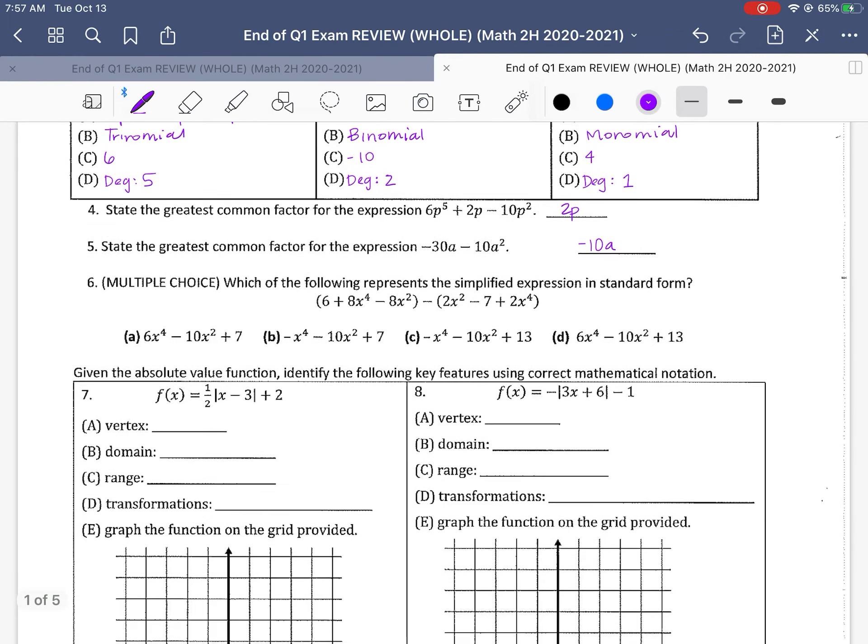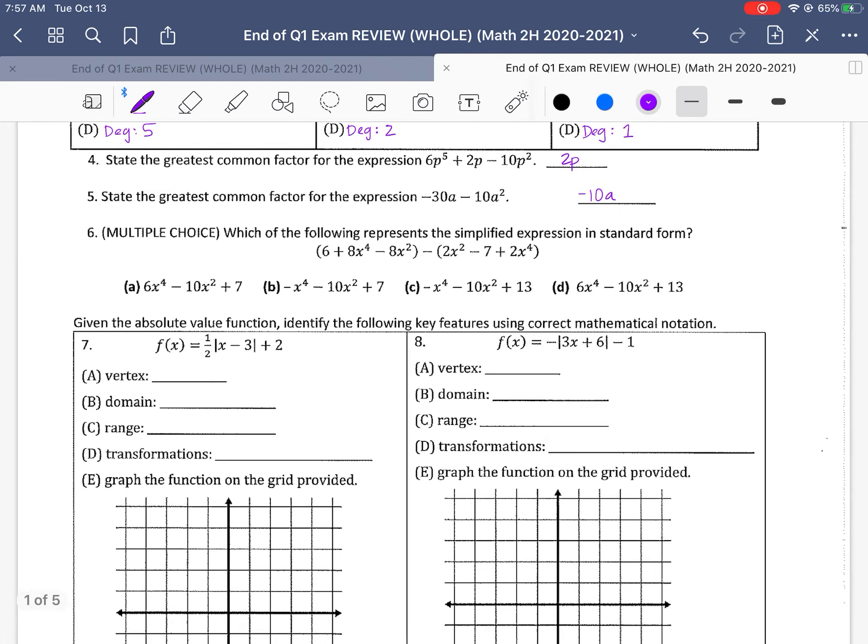Number 6, which of the following represents the simplified expression in standard form? Notice we're just adding, subtracting polynomials. This one's subtraction. So make sure that that negative applies to each piece of that second polynomial. So we've got a negative 2x squared. And then a negative times a negative 7 is a positive 7. And then a negative times that 2x to the 4th would be minus 2x to the 4th. So once we have that, we can combine our like terms. It looks like here we've got an 8x to the 4th and a negative 2x to the 4th. So I know that it's going to be a 6x to the 4th, so either this one or this one with my multiple choice. Notice you have a 6 and you have a 7. That would make 13. So it looks like it's going to be d because there's a 13 there. And then we just check the negative 8x squared minus 2x squared does give us the 10x squared. So we would mark d as our final answer.